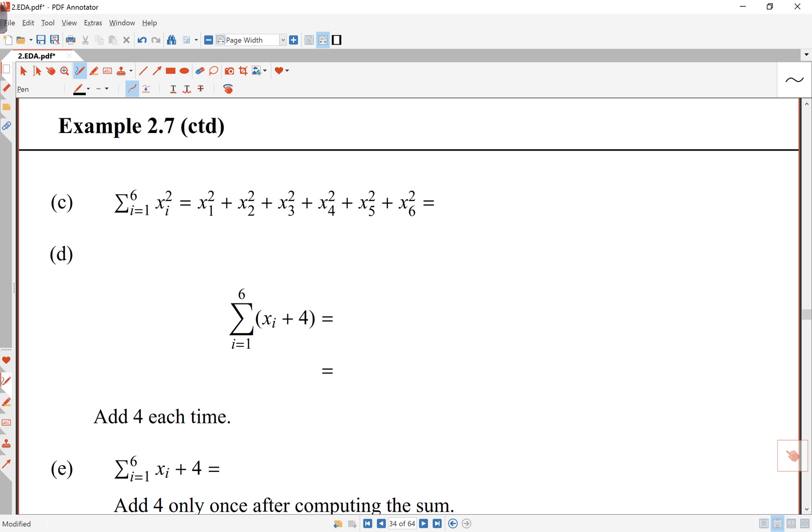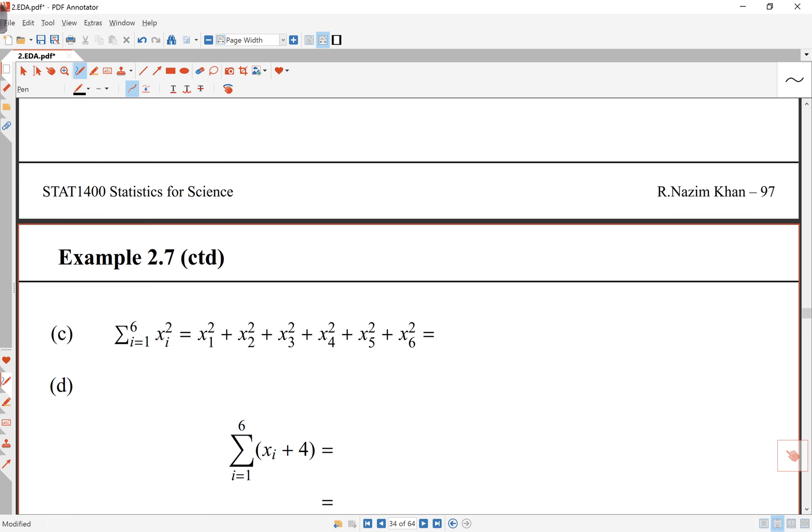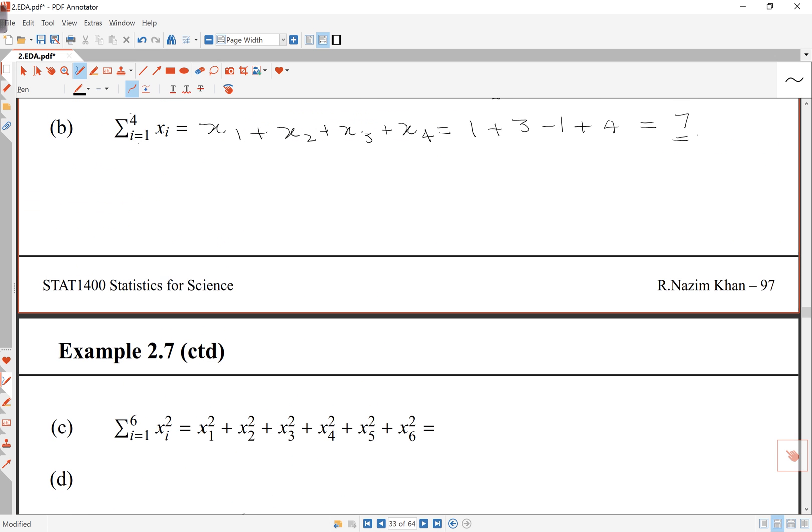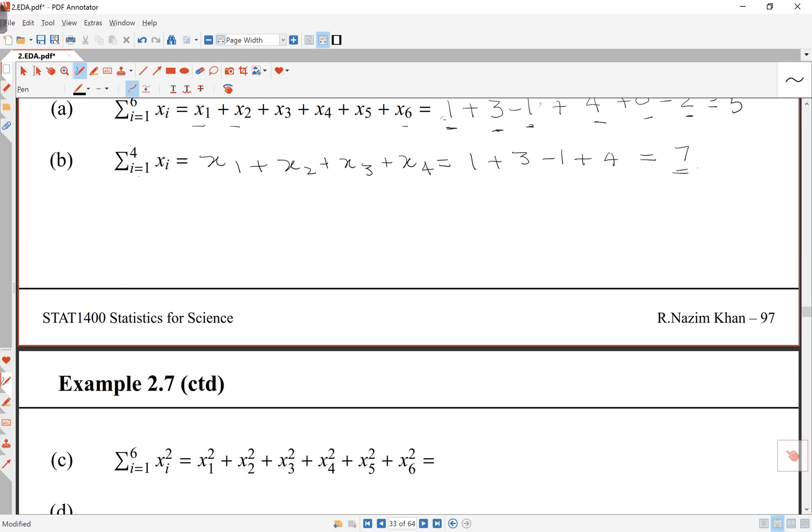If I'm looking at the squares of the numbers, so all that happens here is now, before I add the numbers, I square them. So I'll just go to the slide to look at the numbers here. So here, that means I will have 1 squared plus 3 squared.